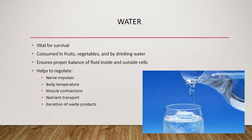Last but not least, we have water. Water is very vital for survival — we can survive several weeks without food, but only a few days without water. We consume water primarily through drinking it, and also get some from fresh fruits and vegetables. Drinking enough water ensures a proper balance of water inside and outside our cells, helping to regulate nerve impulses, body temperature, muscle contraction, nutrient transport from digestive organs to body cells, and excretion of waste products from digestion and cellular activity.